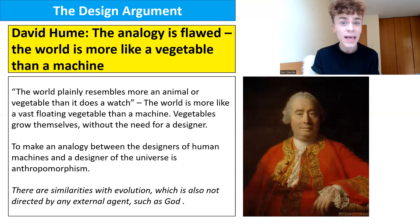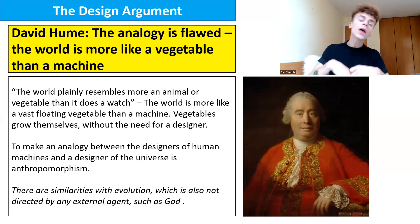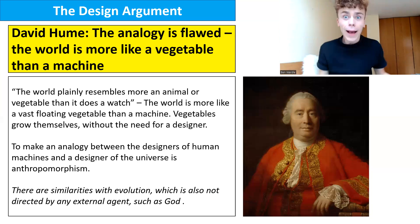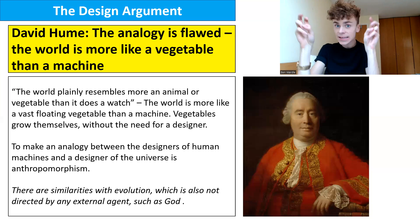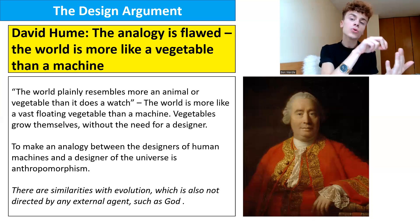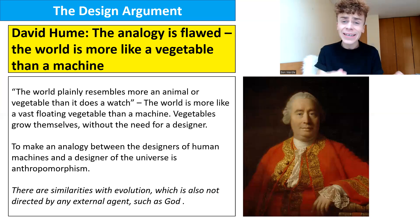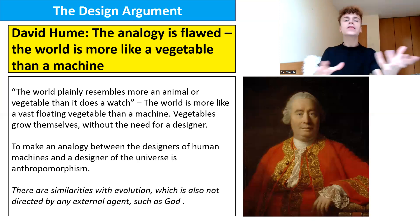The analogy is flawed because the world is more like a vegetable than a machine. There are similarities here with evolution, which is also not directed by any external agent such as God. The natural world could have come into existence organically rather than needing a human-like designer who planned, produced, and manufactured it. This really allows you to focus on the flaws of analogy and demonstrates depth of philosophical understanding.